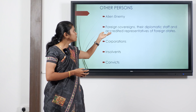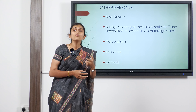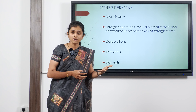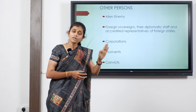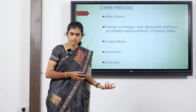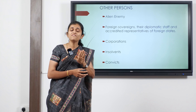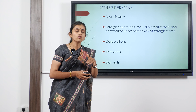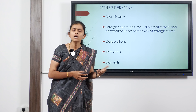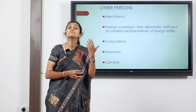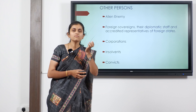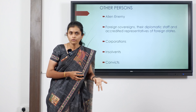Second, foreign sovereigns — their diplomatic staff and accredited representatives of foreign states, such as a US ambassador to India or an Indian ambassador to Italy. These persons can legally enter into a contract with a person of that country and the contract is valid. However, if the other party wants to sue, say, the US ambassador to India in an Indian court of law, they cannot do so without a sanction or permission from the central government, because suing on one contract could affect the diplomatic relationship between both countries.